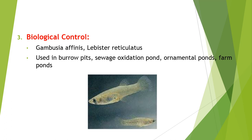The third anti-larval measure is biological control. Here we can use Gambusia affinis and Lebistes reticulatus, which are larvivorous fish. The larvivorous efficiency of Gambusia is due to the fact that a single full-grown fish can eat about 100 to 300 mosquito larvae per day. These can be used in burrow pits, sewage oxidation ponds, ornamental ponds, and farm ponds.